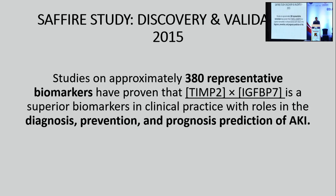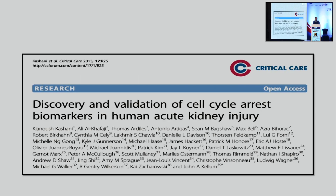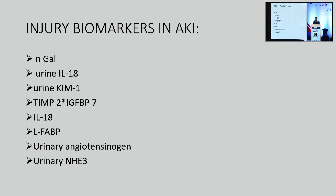Let us look at the very interesting study by Dr. Kashani and his group. The study was divided into two limbs: a discovery limb and a validation limb. In the discovery limb, urine was collected and more than 300 protein moieties were tested — including NGAL, KIM-1, L-FABP, TIMP2, and IGBP7 — for their ability to predict occurrence of AKI. When all these molecules were tested head-to-head, TIMP2 and IGBP7 proved superior in predicting AKI occurrence. This cell-cycle arrest biomarker was then validated in a validation study and was seen as superior to all other biomarkers. Among all biomarkers, at this point in time the literature says that TIMP2 × IGBP7 — the NephroCheck — is the clear winner.